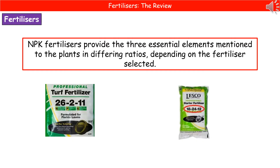NPK is not just one fertilizer — it's a whole range of different ones with different ratios of those three essential elements. For example, one might be 26-2-11 (nitrogen-phosphorus-potassium) and another 18-24-12. Farmers can use soil test results to identify which element is most lacking and choose the NPK ratio accordingly, since there's no point replacing something already present in the soil.